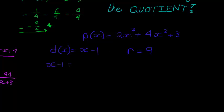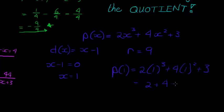First of all, we make our divisor equal to 0. x is equal, therefore, to 1. Let's substitute 1 into our polynomial. See what we get. 2 times 1 cubed plus 4 times 1 squared plus 3. Okay, what do we get? 1 cubed and 1 squared is just 1. So I get 2 plus 4 plus 3. 2 plus 4 is 6. Plus 3 is 9.